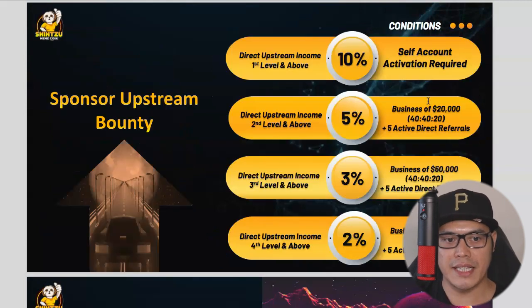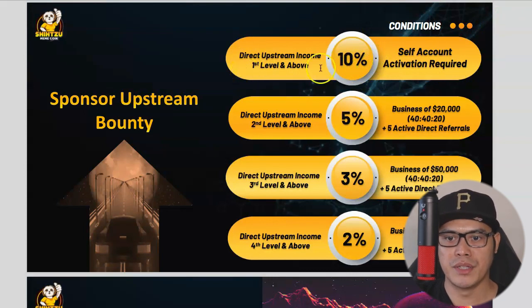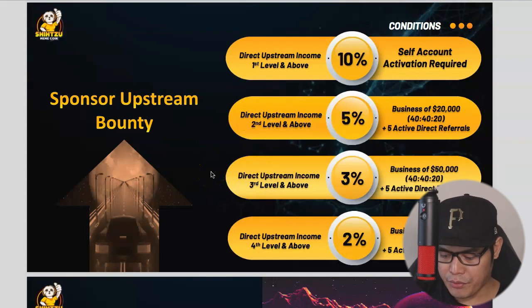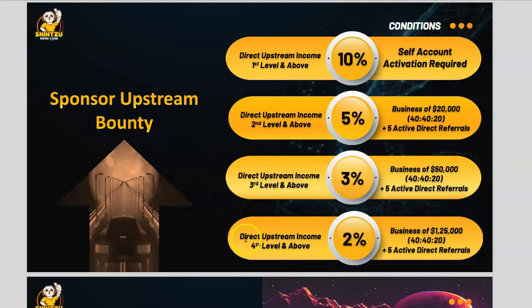The next way of earning is what they call the sponsor upstream bounty. For this income stream, there is 10% for direct upstream income at the first level and above — self-account activation required. Direct upstream income at the second level and above earns 5%. The third level and above earns 3% in commission, and the fourth level and above earns 2% in commission.